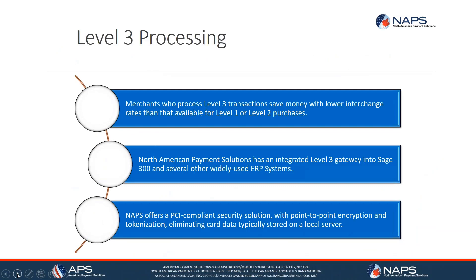Let's talk about Level 3 processing. If you're not familiar with Level 3 processing and you process credit cards today, I highly recommend spending 5 to 15 minutes researching it, because it might be the biggest way for you to change your margins without much cost to your company. Level 3 processing has been around nearly a decade, coming about when the US economy crashed as part of the Dodd-Frank bill to add additional regulations in the banking system. What it does is lower the hard costs — the interchange rate — on business-to-business and business-to-government transactions.